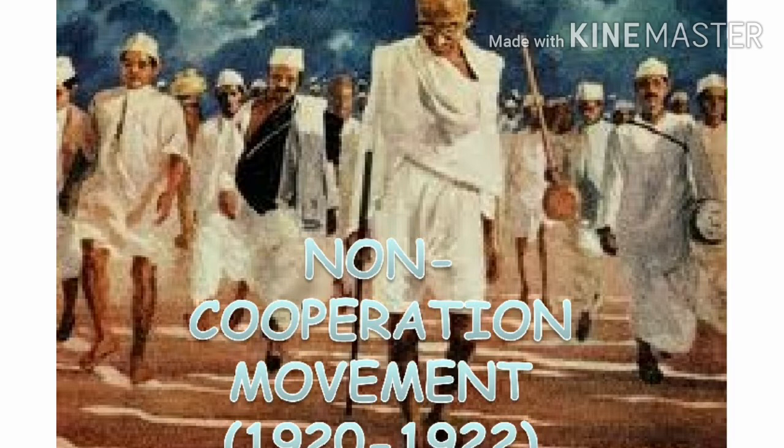What are the features of the Civil Disobedience Movement? The movement was started in 1930 by the Indian National Congress. It was led by Mahatma Gandhi. It was based on the principle of disobeying civil laws.